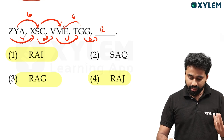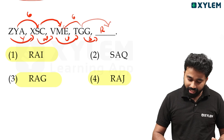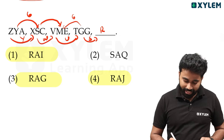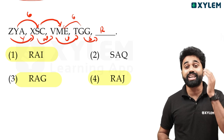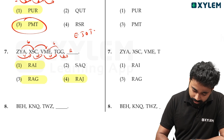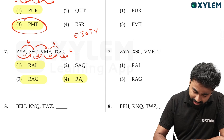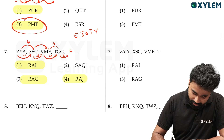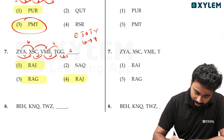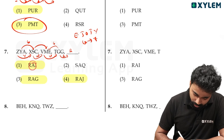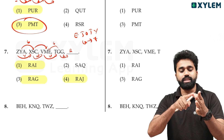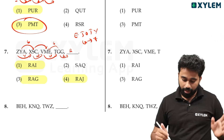Now if you want to use that pattern, you can use it. E, J, O, T. G is 7A. When you get the option, you can use it. G is 7A — A means B, C, D, E, F, G. That's G. That's what A means.